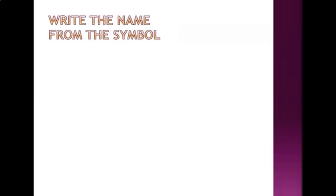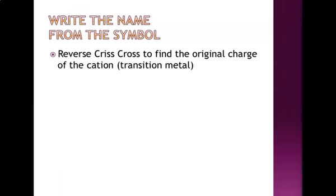Now, writing the name from the symbol, we do the reverse criss-cross to figure out what the original charge of the cation, transition metal, was. That way I can write that Roman numeral.